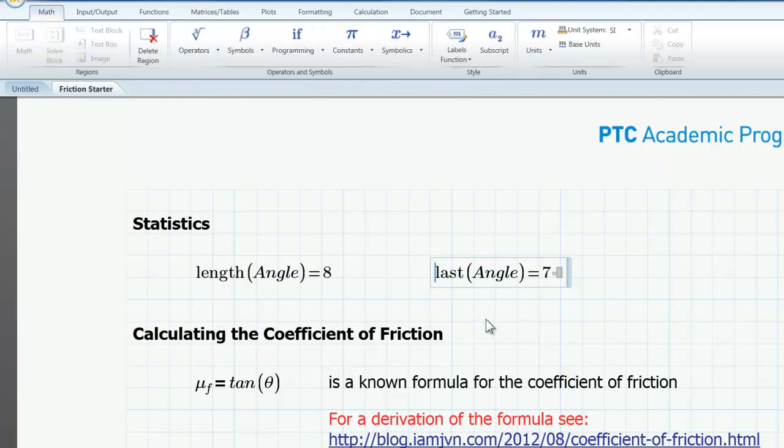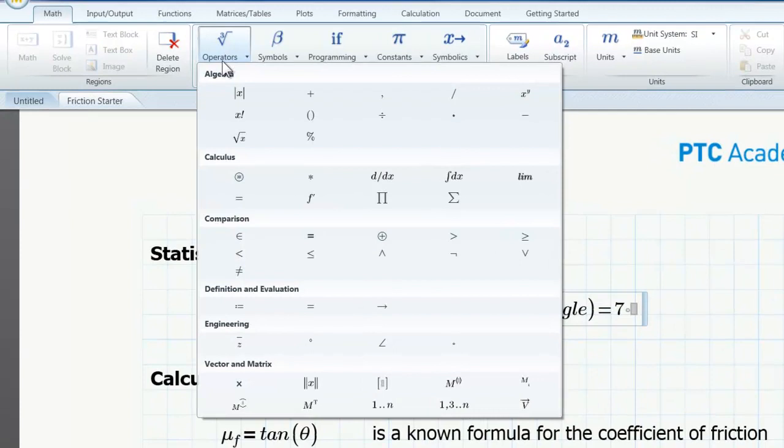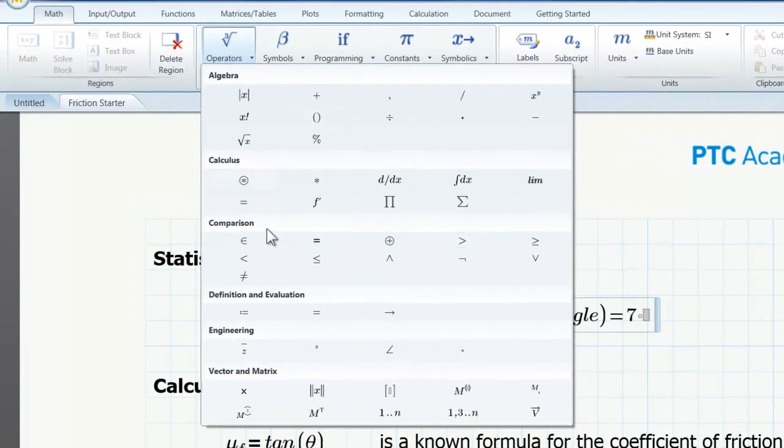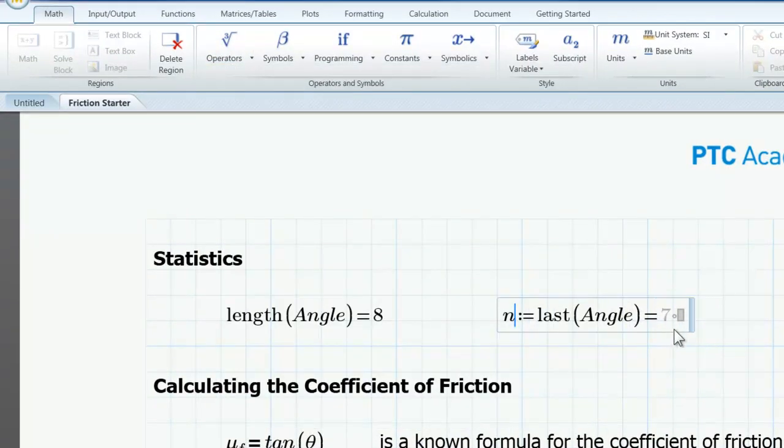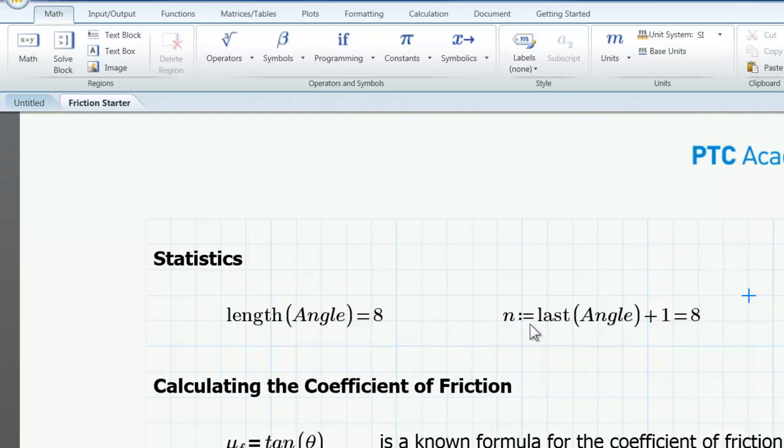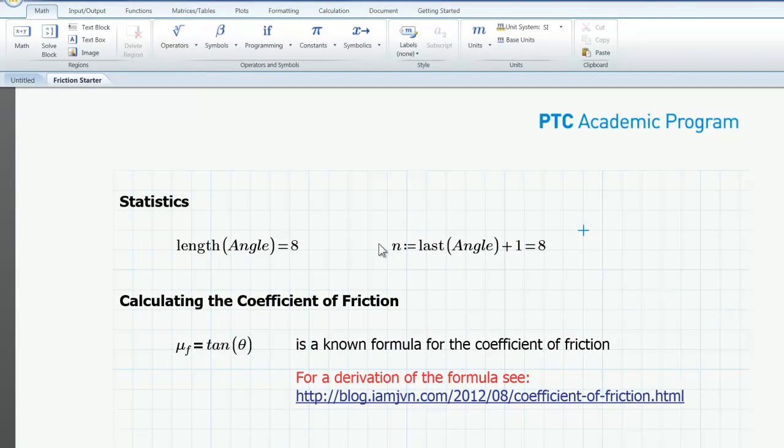But I can use that to create my variable for the number of trials. If I go to operators and I insert a definition operator and I want to call the number of trials n, I can edit my expression and say last angle plus one. And when that gets evaluated, n is now the same as the length. So again, Mathcad's matrices start with row zero and column zero here. But now we have a statistic for the number of trials.